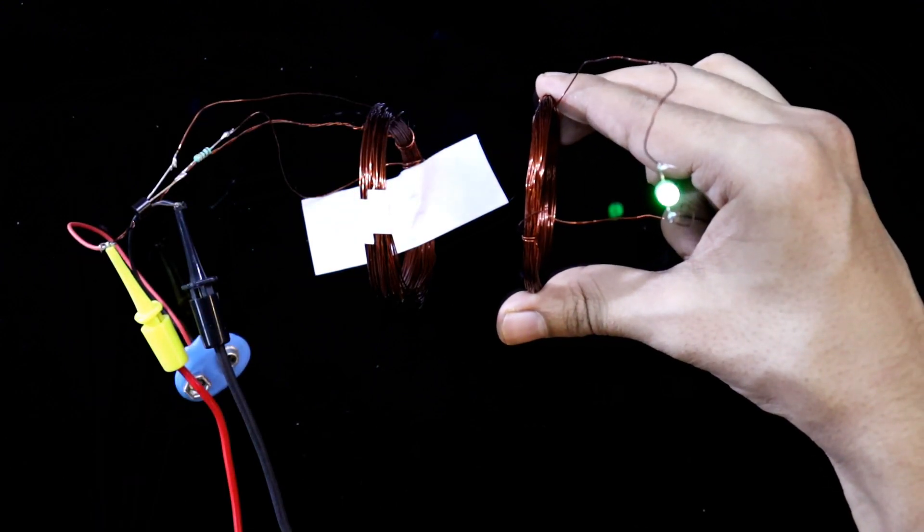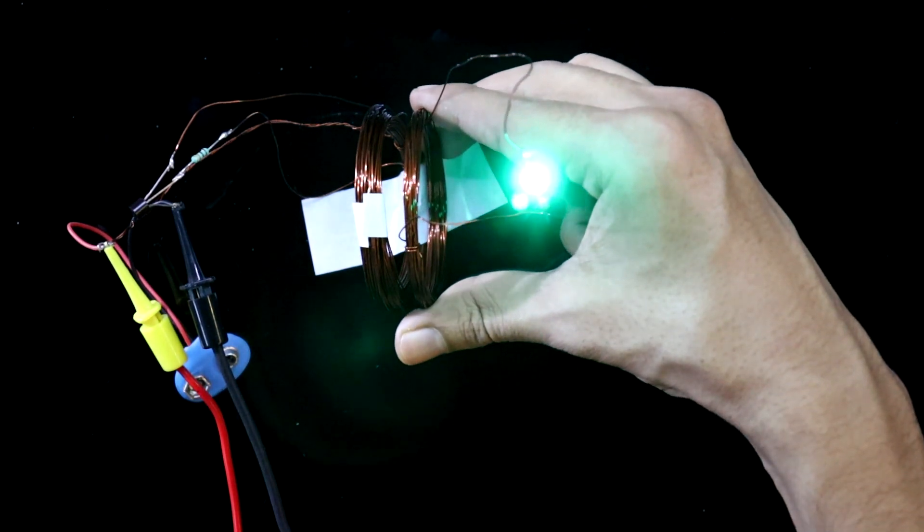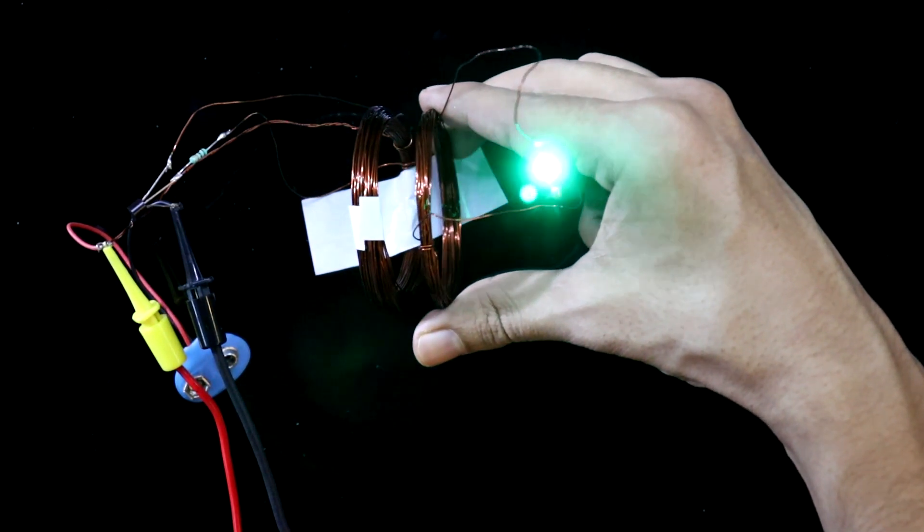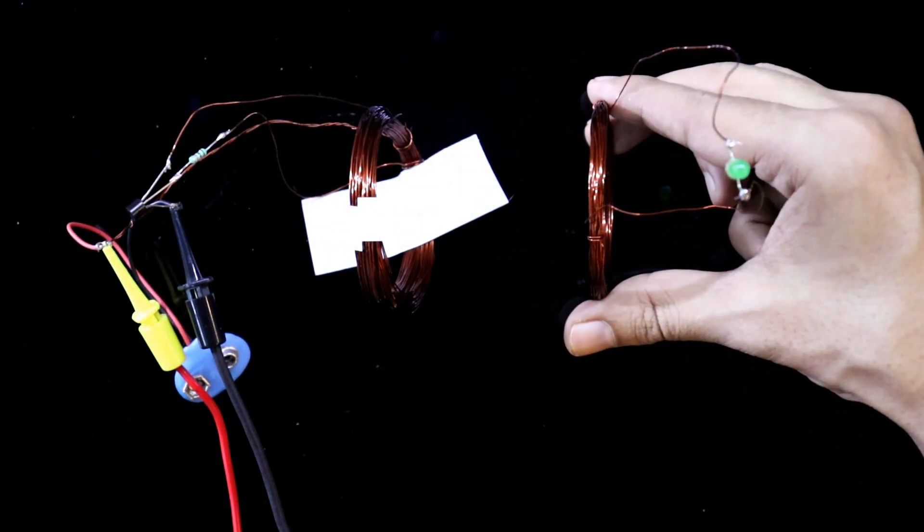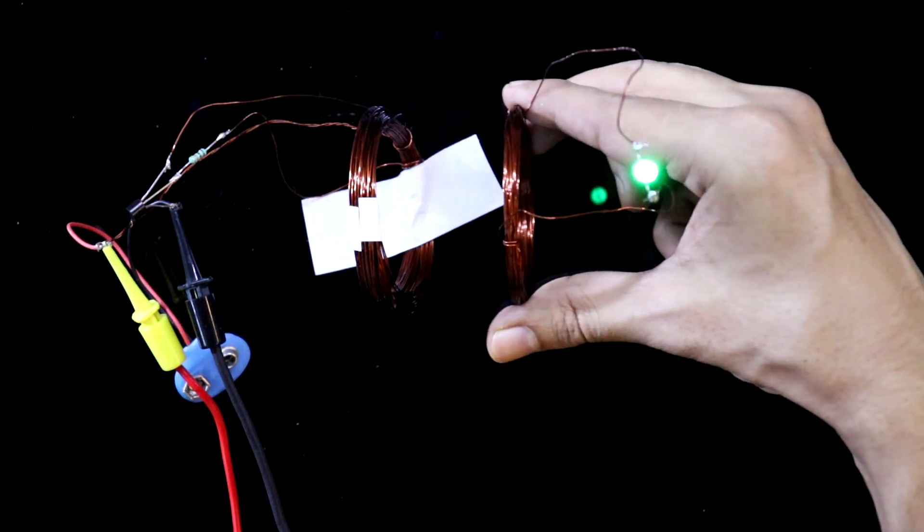Now from this distance it is responding. Full brightness. More distance. Low brightness. So this is how this works.